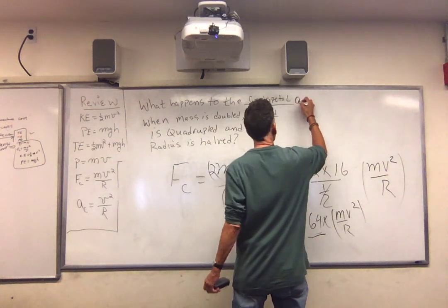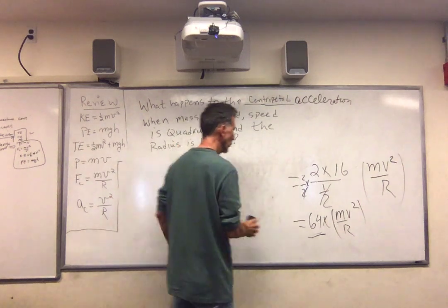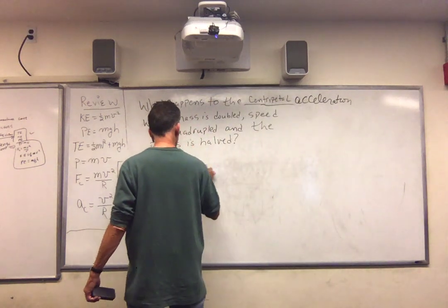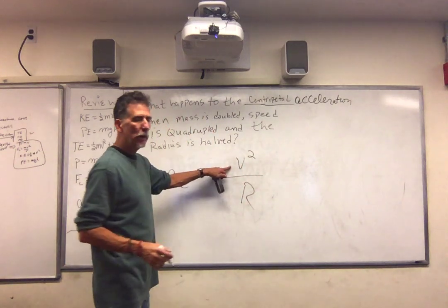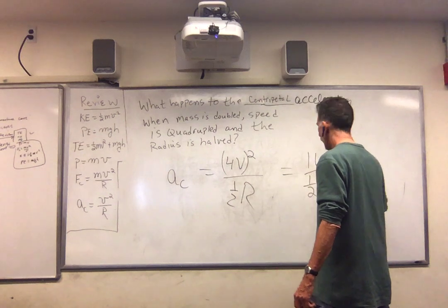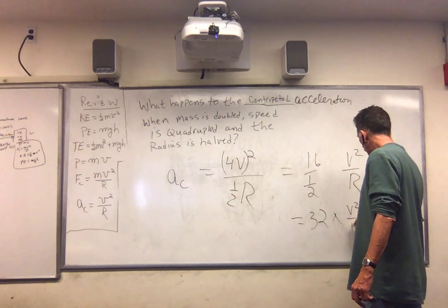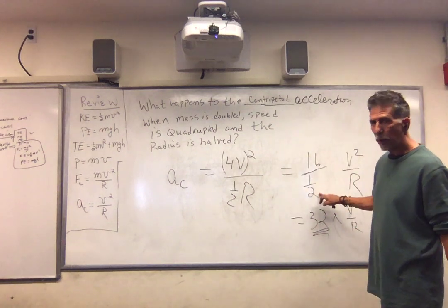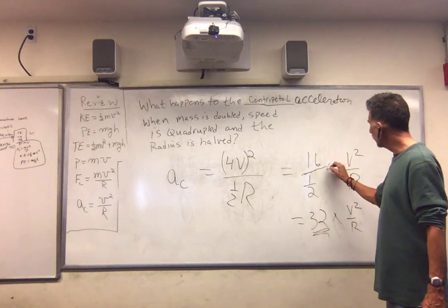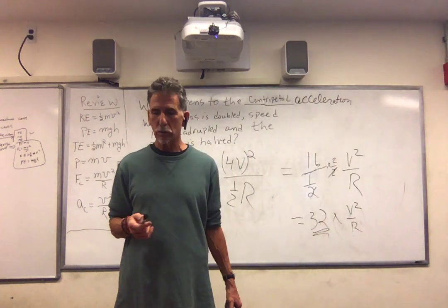Centripetal acceleration. A sub c. V squared over r. Once again, the speed is being quadrupled. And the radius is half. So, we end up with 16 divided by 1 half v squared over r. 16 divided by 1 half is 32 times v squared over r. It's increased 32 times. Look. 16 divided by 1 half. Suppose you have $16. How many half dollars are in $16? The answer is 32. Once again, you can multiply by 1, which is 2 over 2. 2's go out. 2 times 16, 32. Go to Khan Academy and review your fractions.